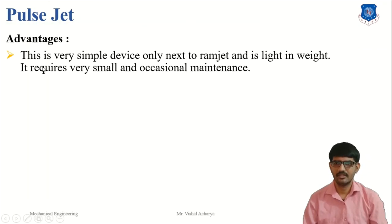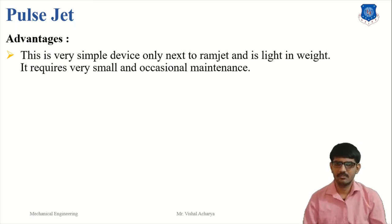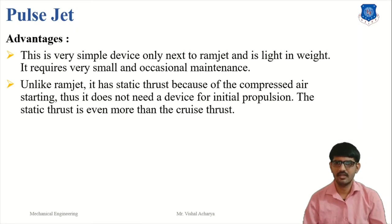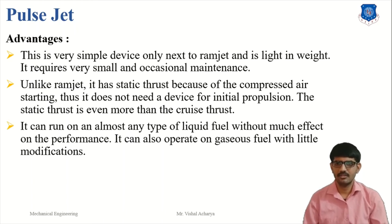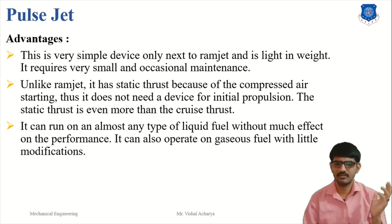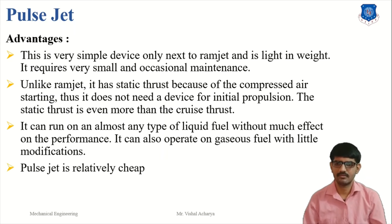The advantages of the pulse jet: it is a very simple device, only next to the ramjet. It is very light in weight and requires very little and occasional maintenance. Unlike the ramjet, it produces static thrust and does not require initial propulsion — the ramjet requires a launching device, whereas the pulse jet does not. It can run on almost any type of liquid fuel without much effect on performance, and can also operate on gasoline fuel with little modification. The pulse jet is also relatively cheap compared to the turbojet.